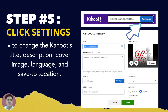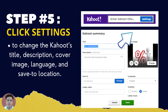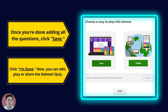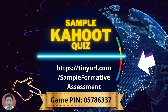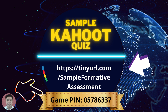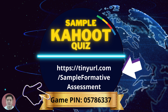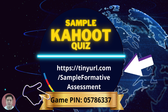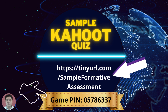For step number five, click settings to change the Kahoot's title, description, cover image, language, and save-to location. This step is also important to make it easier to find your Kahoot quiz file. Once you're done adding all the questions, click the save button and you're done. Now you can edit, play, or share the Kahoot quiz. I have prepared a sample Kahoot quiz — answer it in your free time because we have only limited time here. Just type this link in your browser and use the game pin 05786337 to experience playing the Kahoot quiz. Enjoy and have fun.